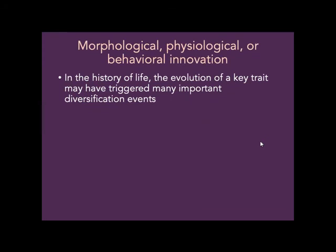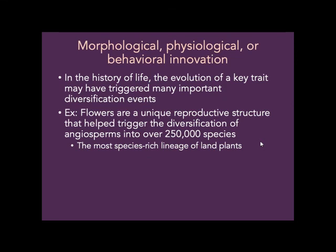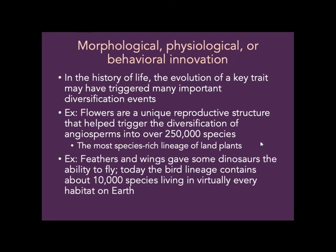In the history of life, key trait innovations triggered important diversification events. The innovation of the flower triggered the diversification of angiosperms — there are now over 250,000 species of flowering plants. Similarly, feathers and wings gave some dinosaurs the ability to fly, and the bird lineage contains about 10,000 species living in virtually every habitat on Earth. Just that one innovation — flowers, or feathers and wings — allowed these lineages to have an adaptive radiation.